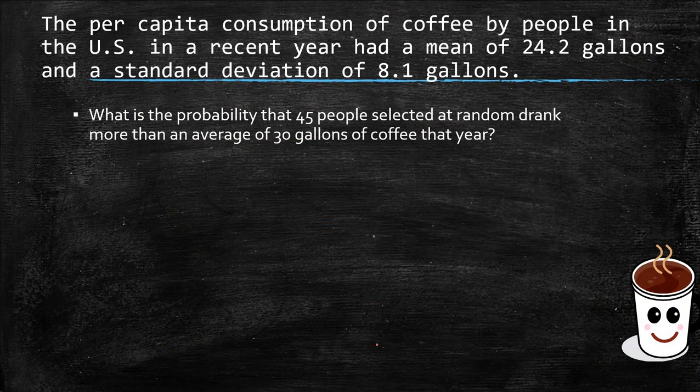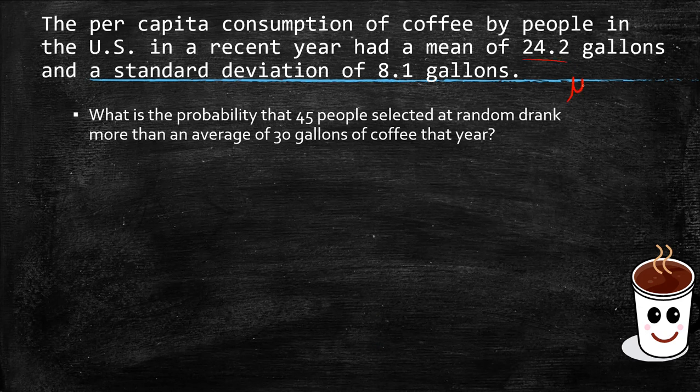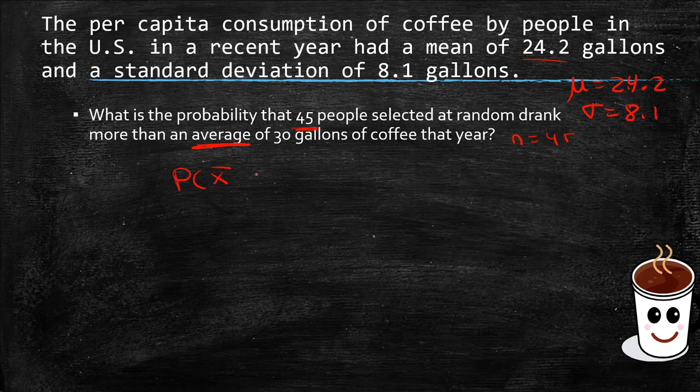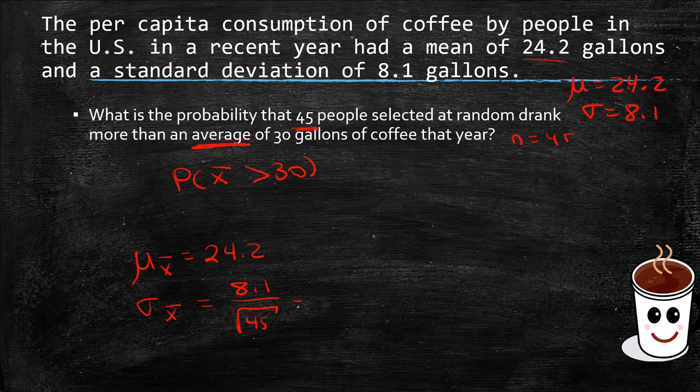Let's do one more. The per capita consumption of coffee by people in the U.S. in a recent year had a mean of 24.2 gallons and a standard deviation of 8.1. What is the probability that 45 people selected at random drink more than an average of 30 gallons of coffee that year? So there's 45 people, and we're trying to find the probability that the average is more than 30 gallons. Okay, so that means we have to find mu of x bar and sigma of x bar. Mu of x bar, let's see, do we have a normal distribution? I don't know. I don't see it. So we don't know, but we do have a large enough sample size. So that means that our mu of x bar will equal mu, sigma of x bar. I love my happy little cup of coffee. Coffee does make me happy. It's 8.1 divided by the square root of n. And in this case, n is 45.